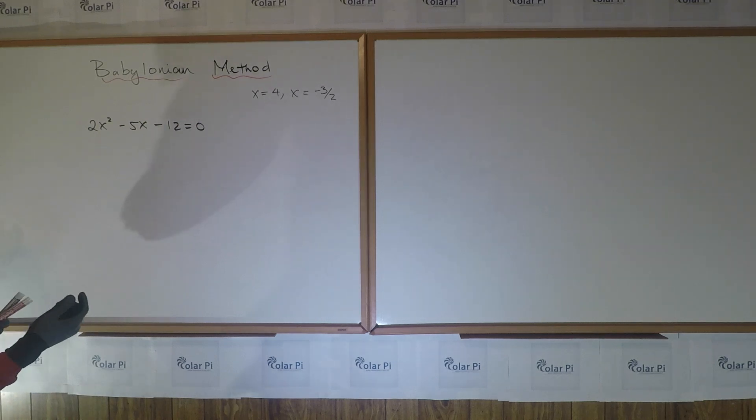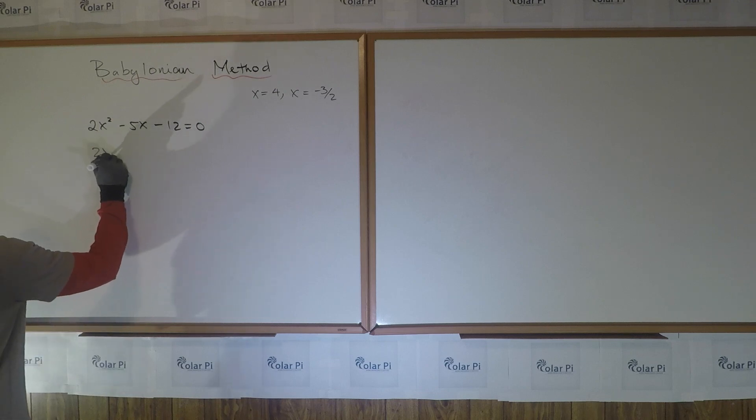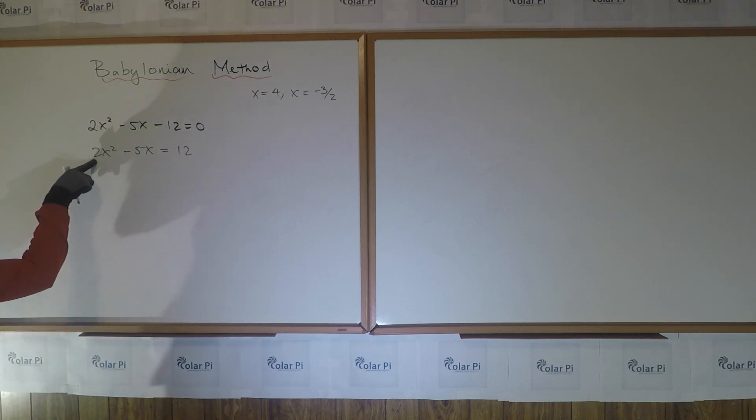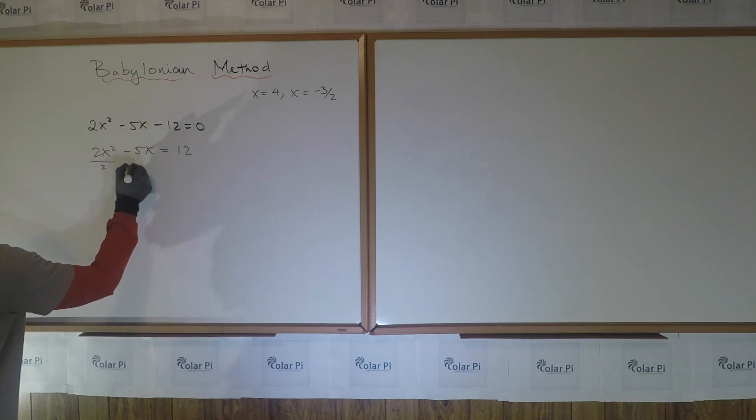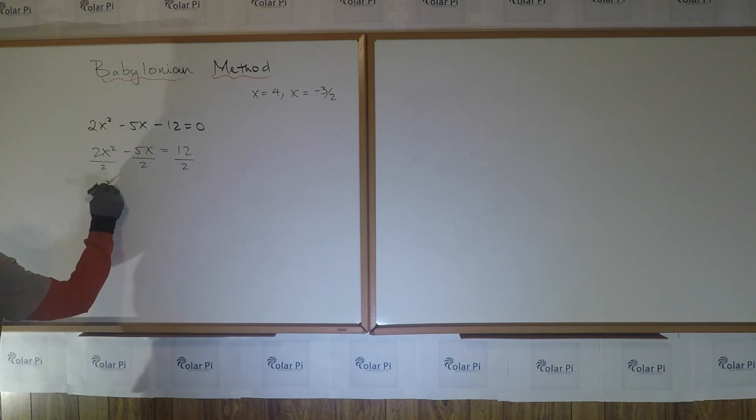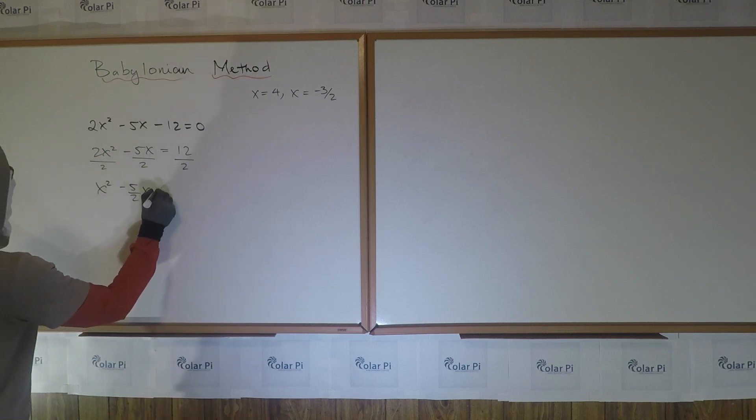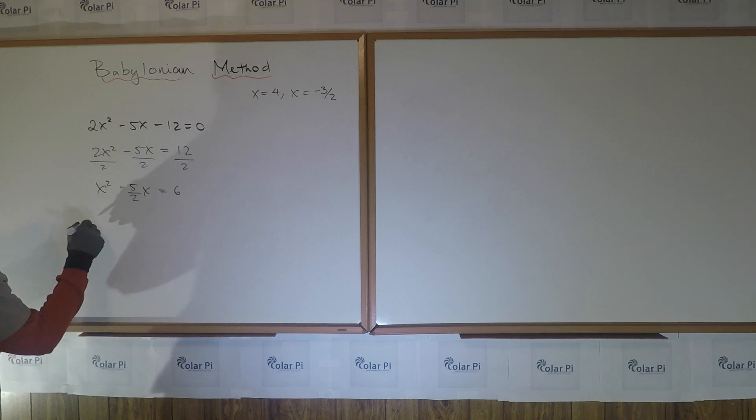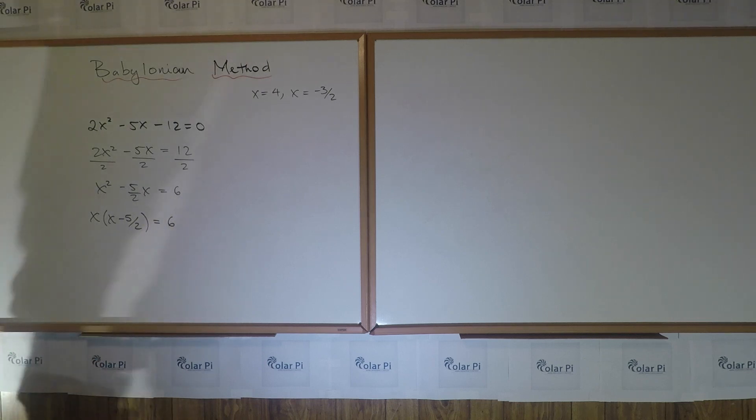The first step is the same as before. Move this constant term to the other side. So that means I have 2x² - 5x = 12. But now, because x² is being multiplied by a number different from 1, we have to divide by this number, which is on both sides, obviously. So, x² - (5/2)x = 6 is what we'd get. And then, from here, mimic the steps we did earlier. Just factor these two guys. So that would be x(x - 5/2) = 6.